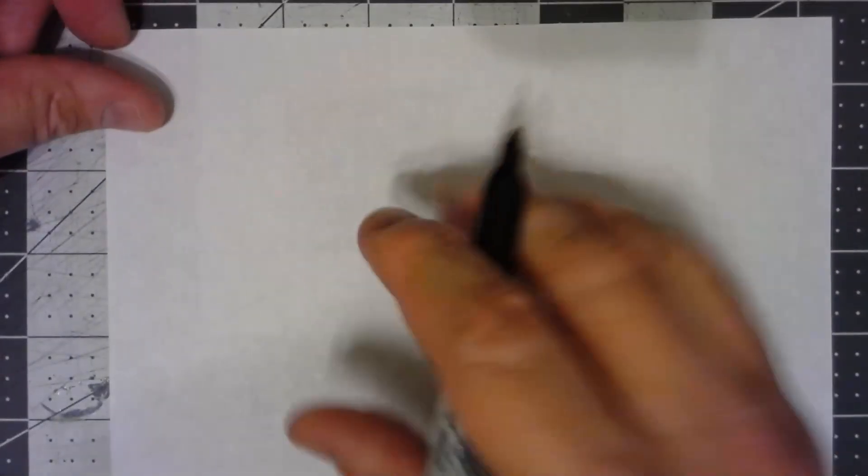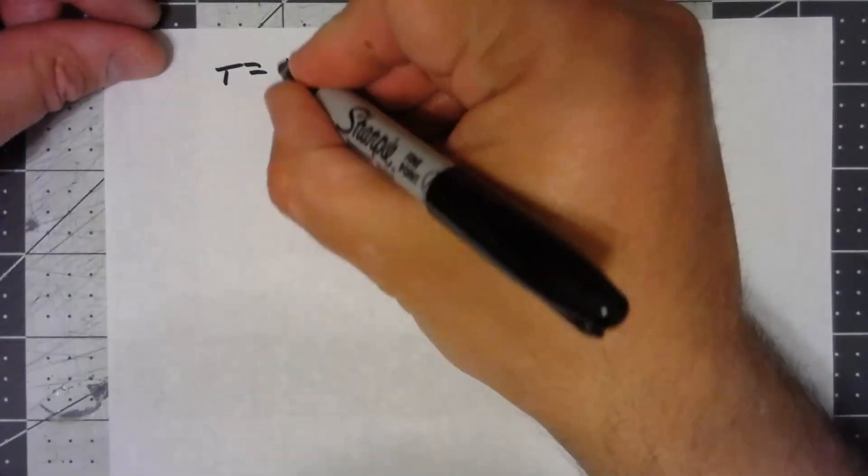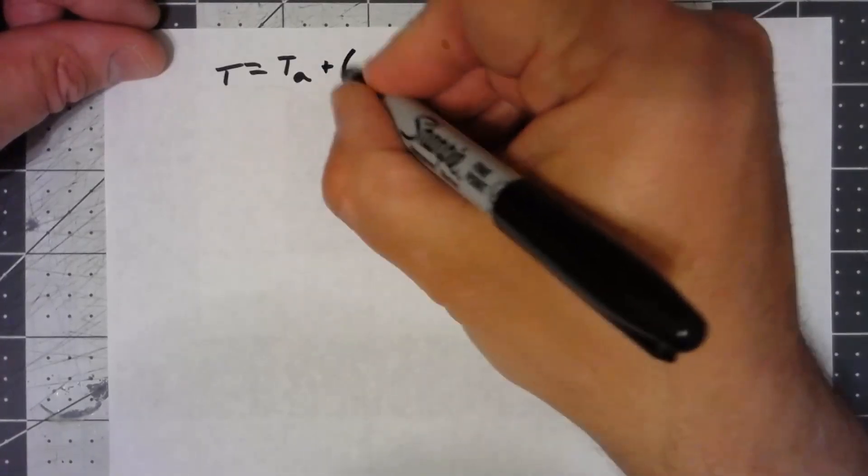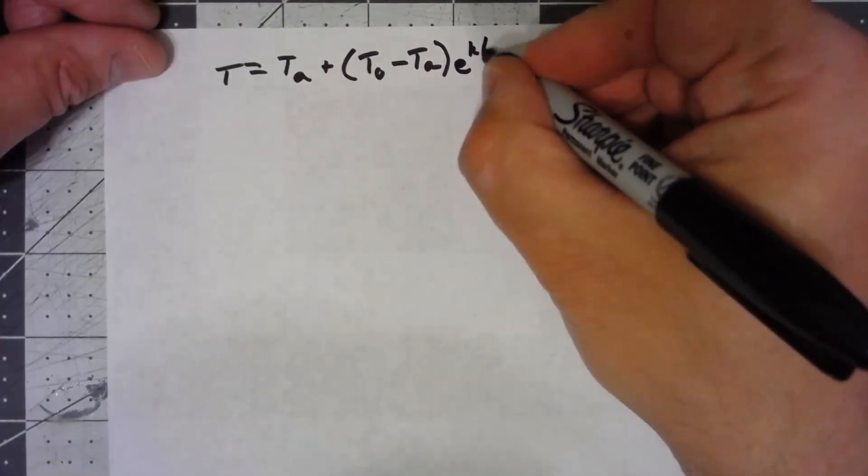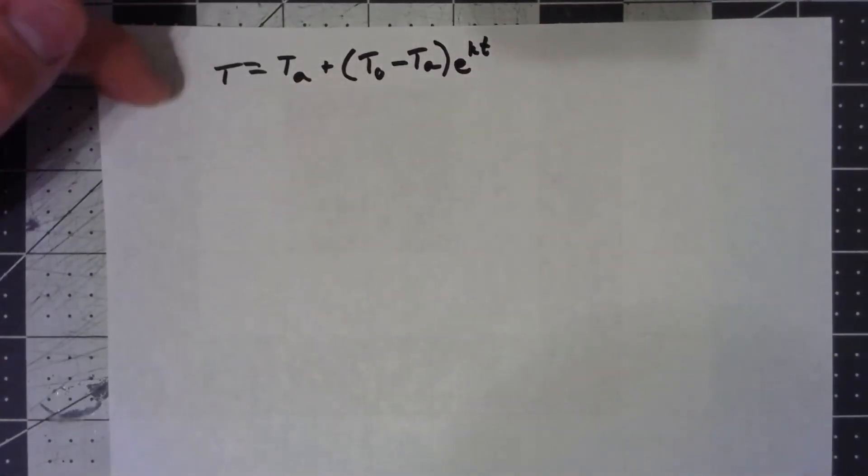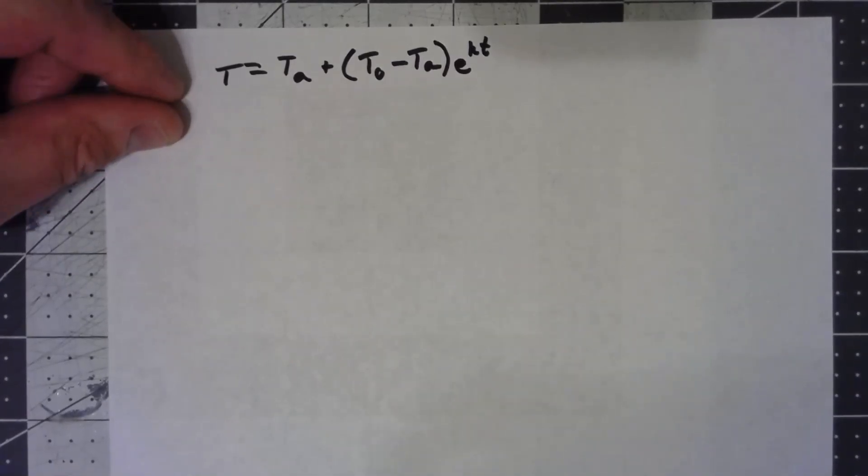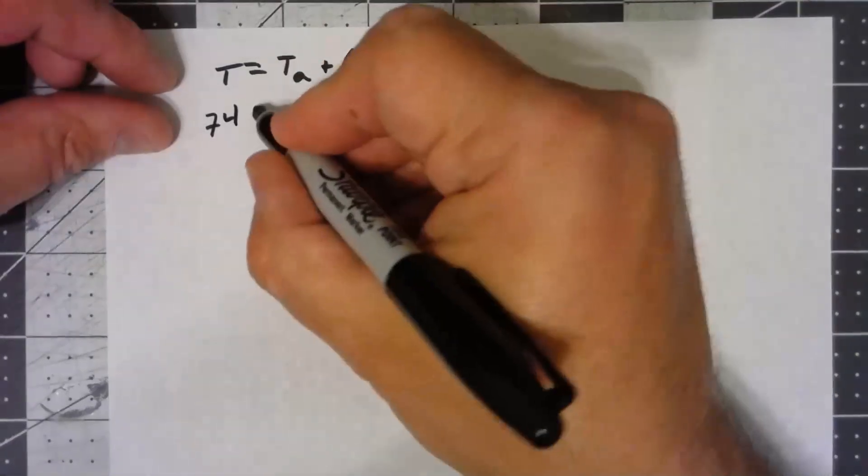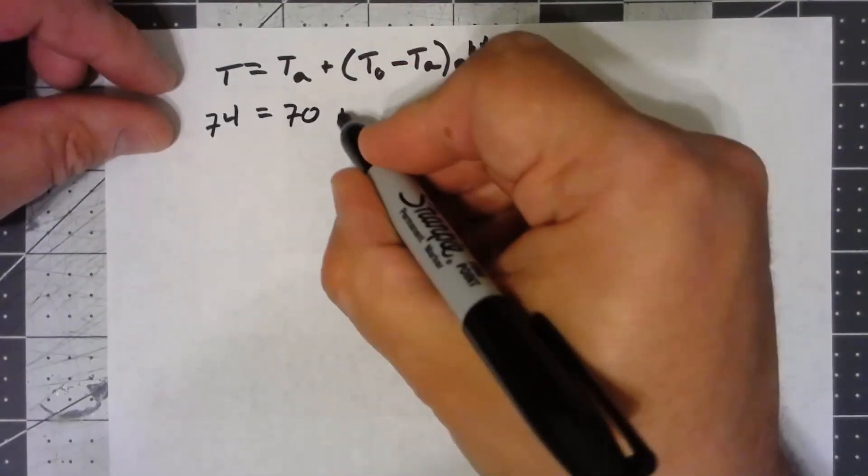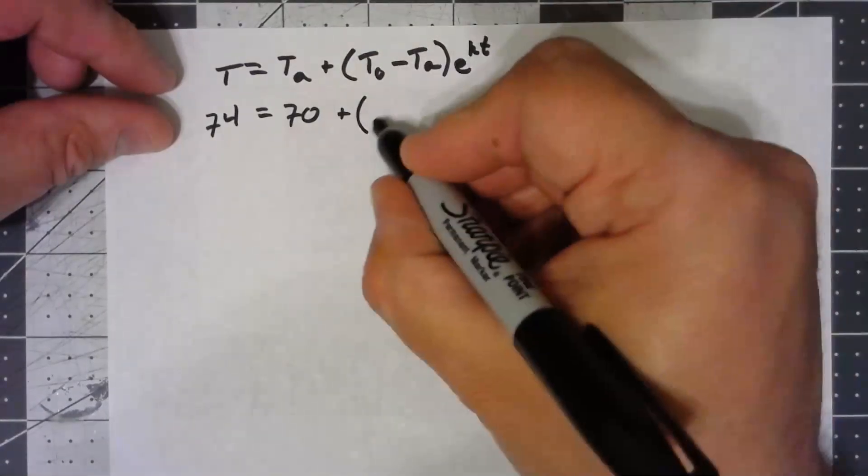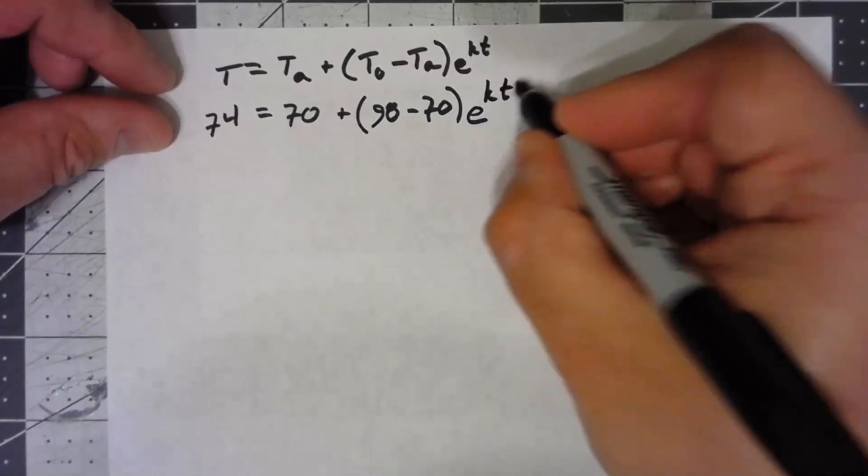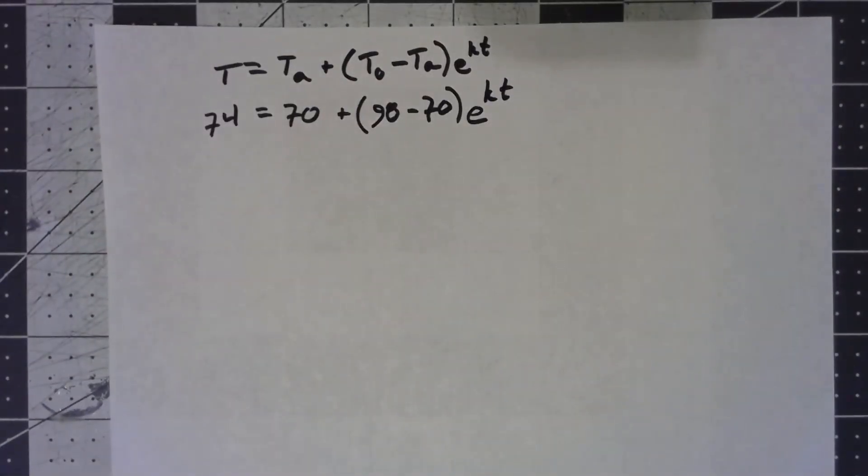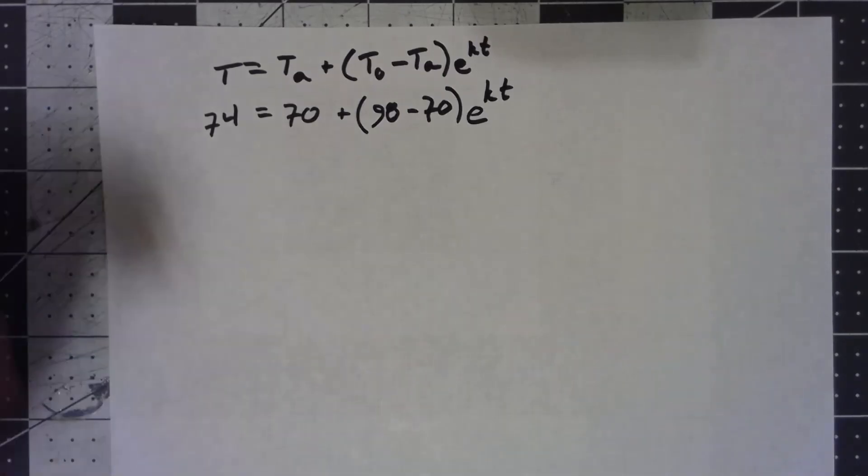Same formula I'm using. When it was discovered, the temperature of the body was 74, so I'll put that in for my T. The ambient temperature was 70. The original temperature of the body was 98 minus 70, e to the kt. And just like before, even though we know what K is, I'm not going to plug that thing in because it's so annoying to write out. I'll plug it in at the very end.